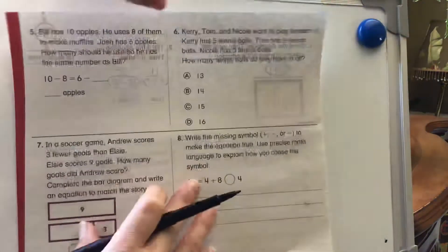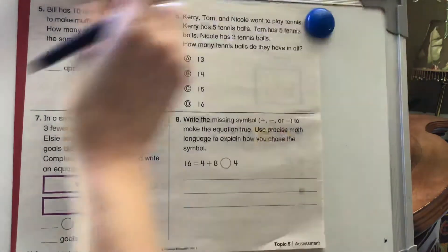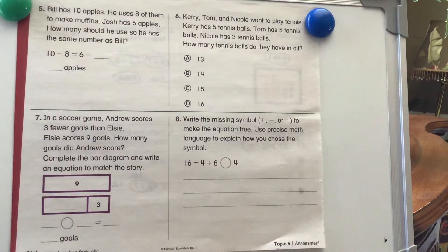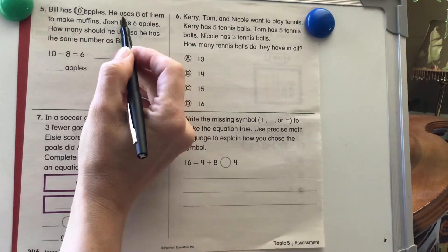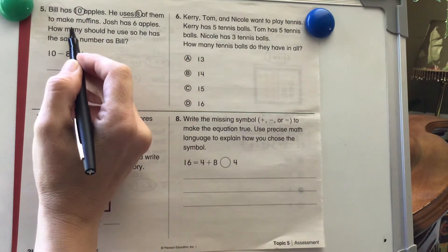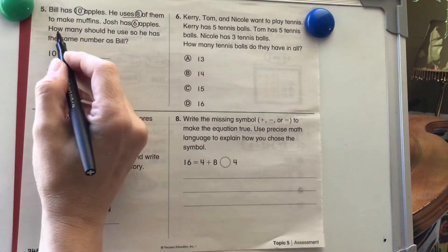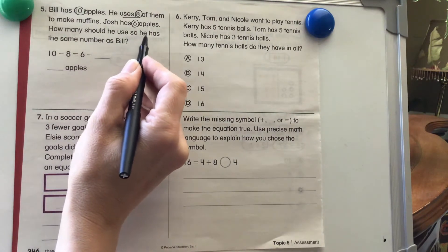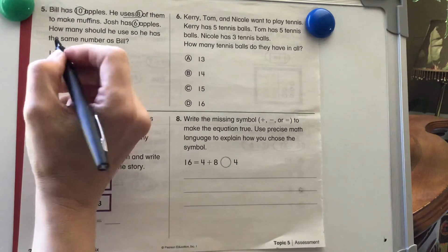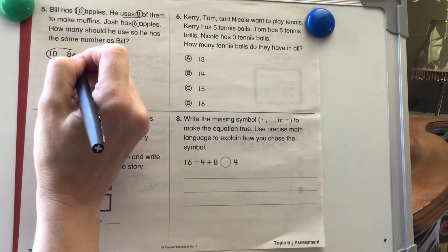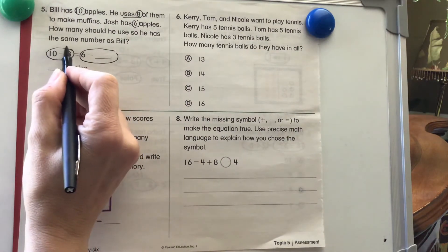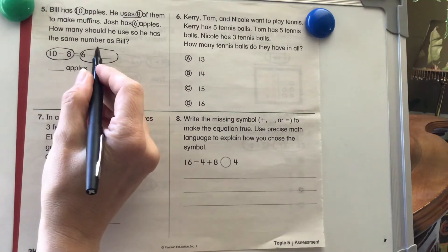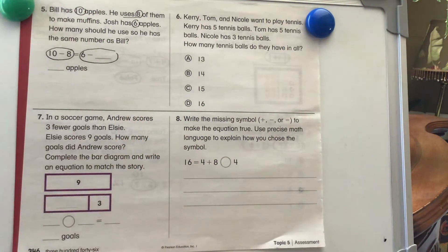Let's head to the back side of our assessment here and read through these questions. Bill has 10 apples. He uses 8 of them to make muffins. Josh has 6 apples. How many should he use so he has the same number as Bill? We have to figure this out first because equal sign means the same as. So 10 minus 8 equals something and we need 6 minus something to be the same as over here. Pause the video, work on your answer and then turn it back on.